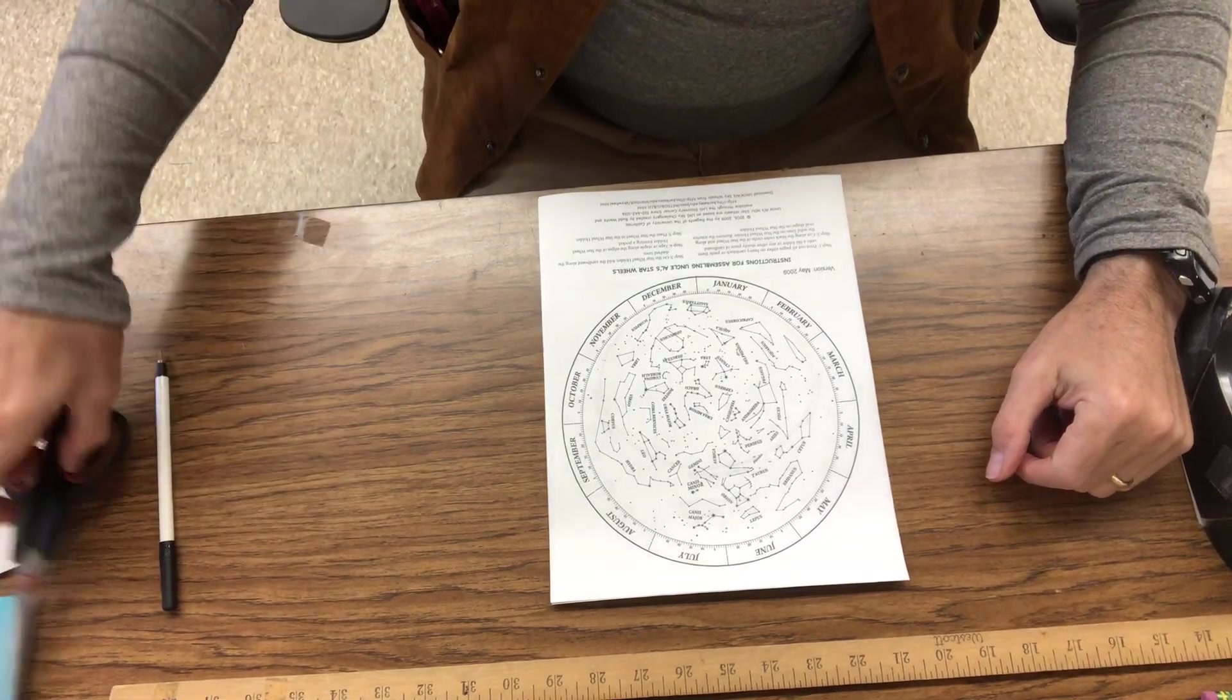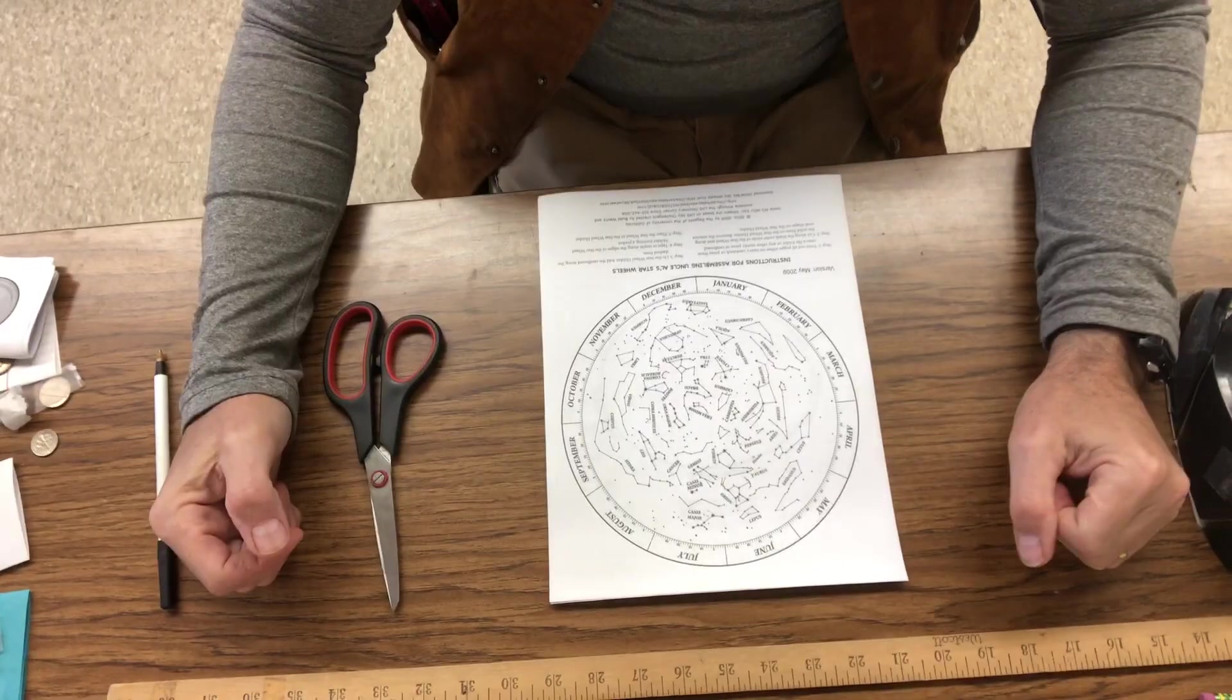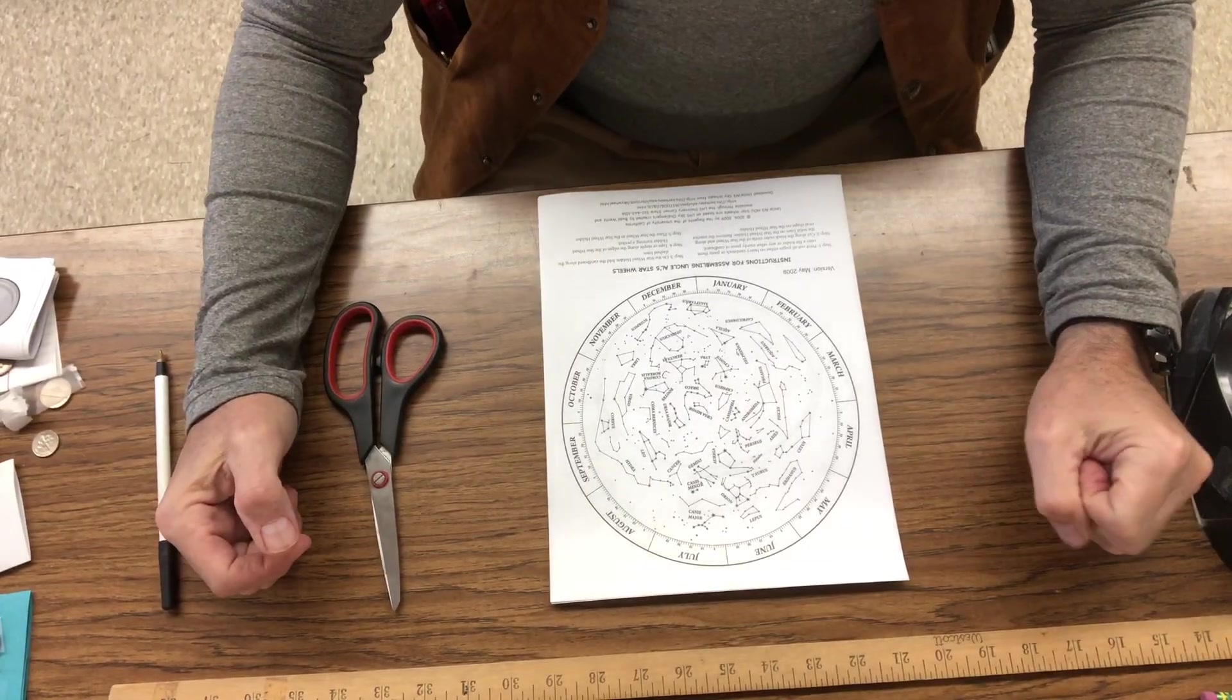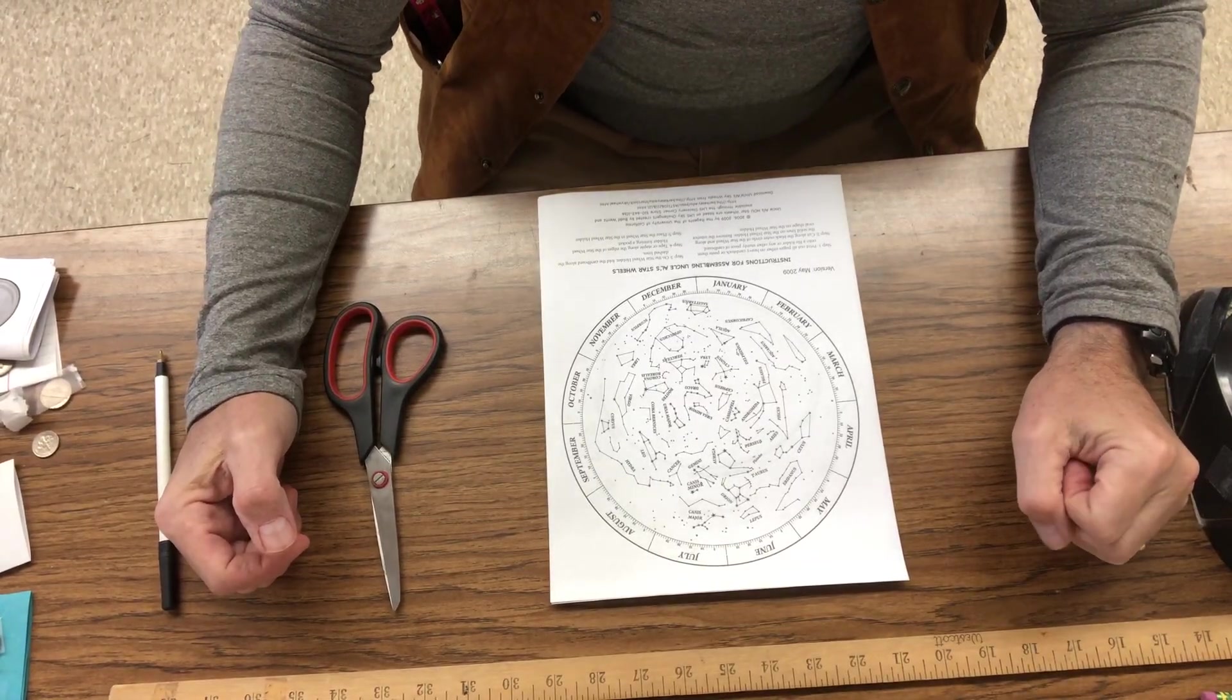Hello everybody. I thought I'd show you how to make Uncle Al's Star Wheel. Sixth graders, we did this at the beginning of the year, one of our first activities.